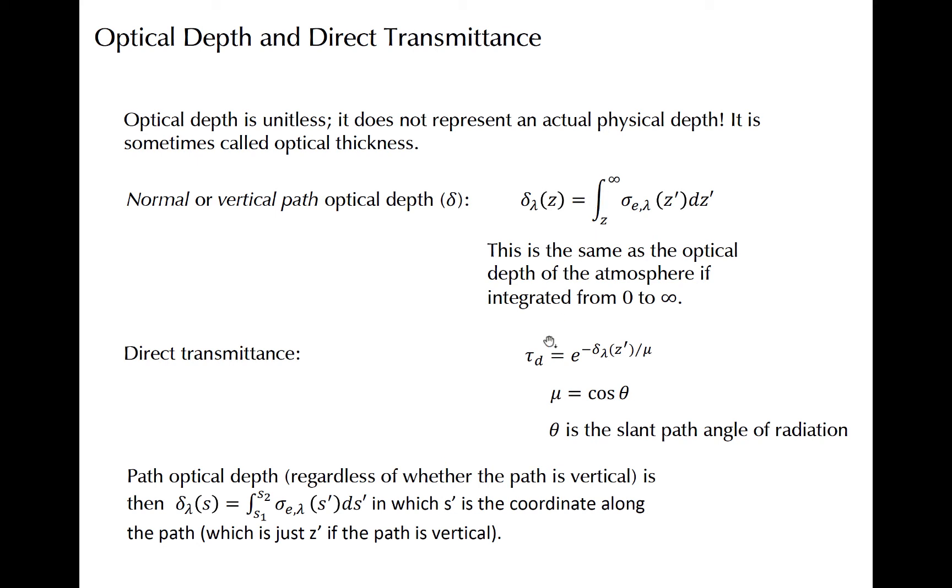Another important concept is the direct transmittance, and sometimes I'll call this transmissivity. It exponentially decays as the vertical path optical depth increases, and it is also dependent upon the angle off the vertical that describes the direction of the path. We will see some drawings of this next to help you visualize this. That angle is described as theta, and we will denote mu as the cosine of theta. If theta is zero, meaning a vertical path, then the direct transmittance is just e to the negative vertical path optical depth, and you are left with the direct transmittance of the atmosphere, which is what we discussed in previous modules.